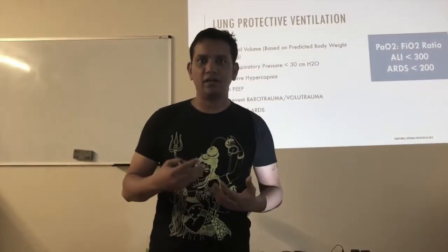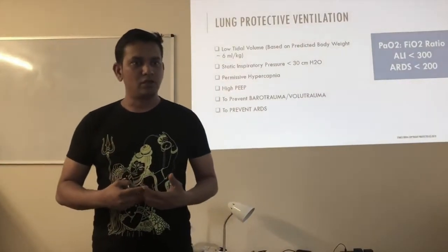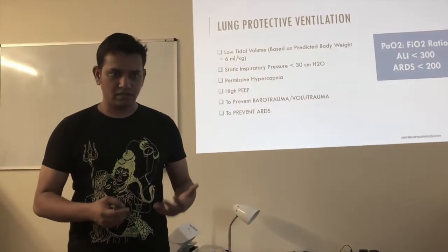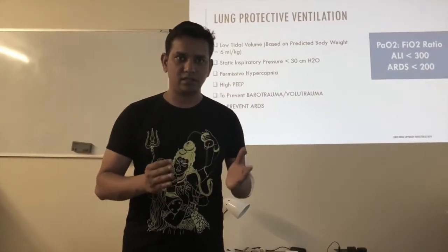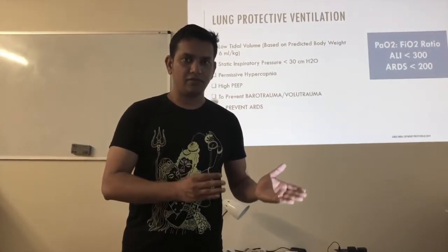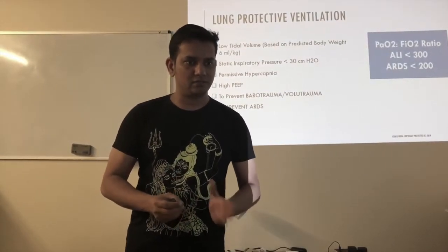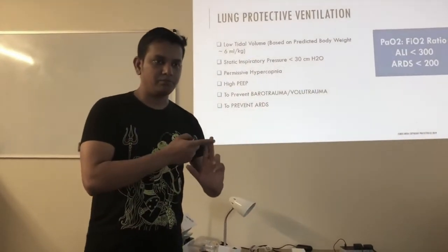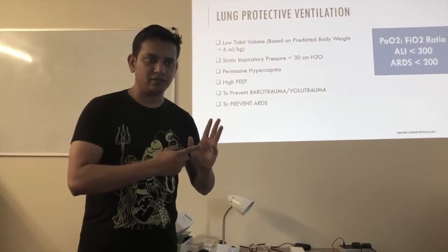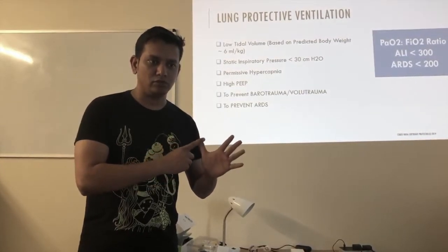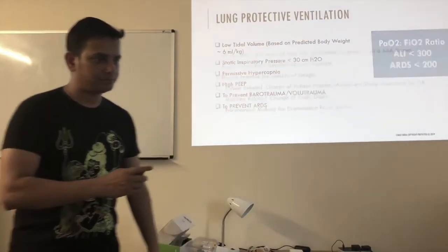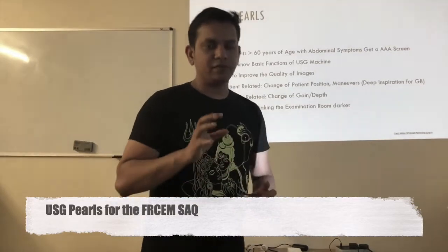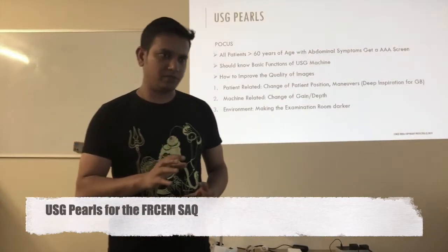It will also prevent development of ARDS. The differentiating point between acute lung injury and ARDS: calculate the PaO2/FiO2 ratio. If it is less than 300 but greater than 200, it is acute lung injury. If it is less than 200, it is ARDS. So: low tidal volume, high PEEP, permissive hypercapnia — to prevent ARDS and barotrauma.